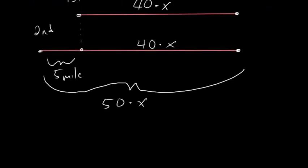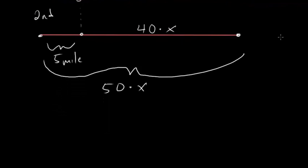So with this information we can conclude that this total distance here, five miles plus this 40X has to equal this total distance, 50X. So in other words, five plus 40 times X is equal to 50 times X.